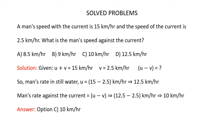A man's speed with the current is 15 kmph and speed of the current is 2.5 kmph. What is the man's speed against the current? Here you are given 4 options and you have to find out which of these options is the correct one. You are given that a man's speed with the current is 15 kmph.